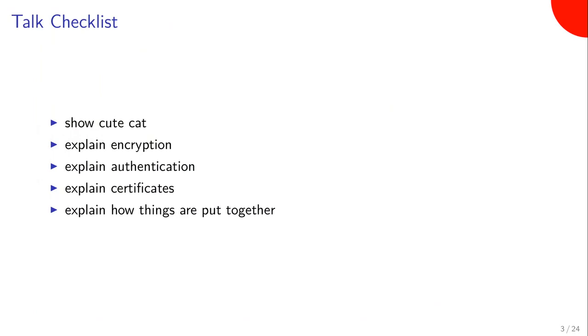This is my checklist for this talk. For the remainder of the talk, I want to explain what encryption is, what it does and what it does not do. I want to explain authentication, which fixes a problem that encryption does not solve. I want to explain certificates because they help a lot with both encryption and authentication. And in the end, I want to explain how these things work together and can be combined to build more useful things.